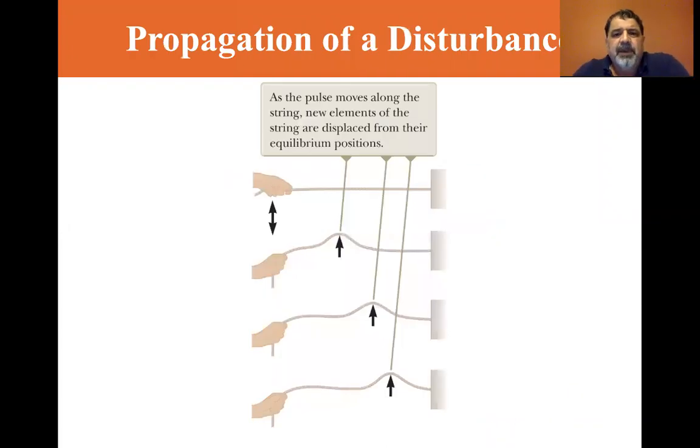You can see here that as the pulse moves along the string, new elements of the string are displaced from their equilibrium position. So if you snap this string, you put a wave pulse on the string and the string will travel down the length of it. Now, the motion of the string is just up and down. In other words, no particles are actually moving down.